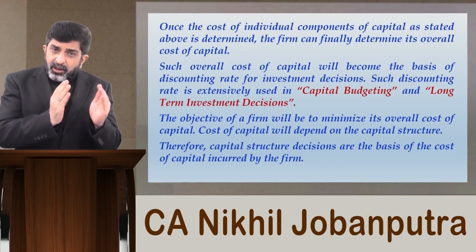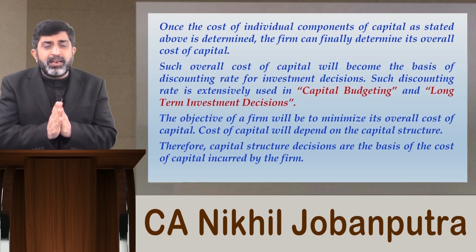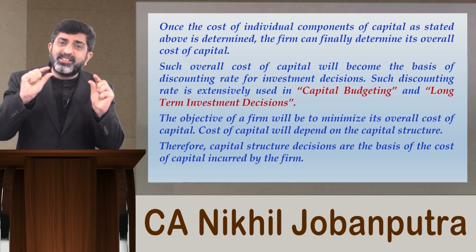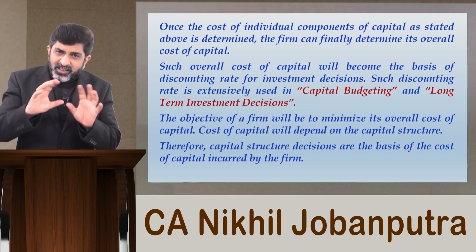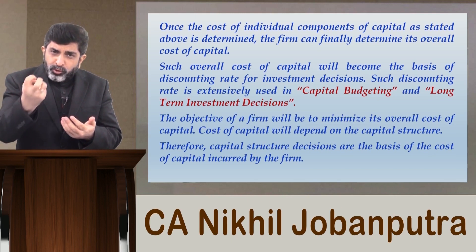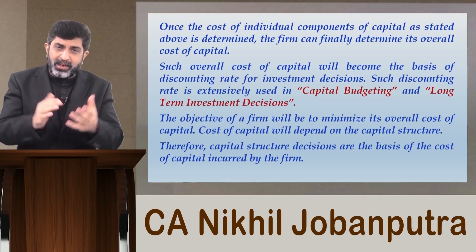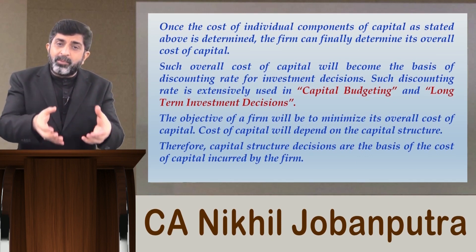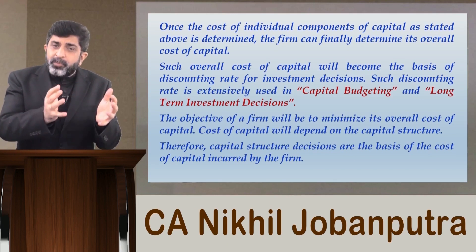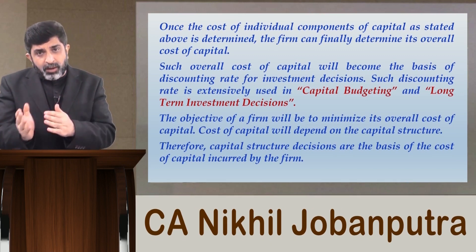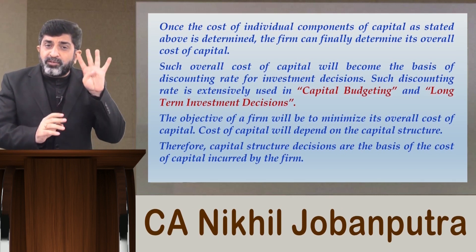Recall when we were learning long-term investment decisions, particularly capital budgeting - we dealt with a discounting rate which was the expected rate of return for the company. At that time I told you not to worry about the discounting rate and that we would learn its source later. It basically indicates the cost of capital for the company. Now the time has come to understand how to determine cost of capital. Once you determine cost of capital, it will become the expected rate of return for the company, because it is the minimum rate of return the company would want.